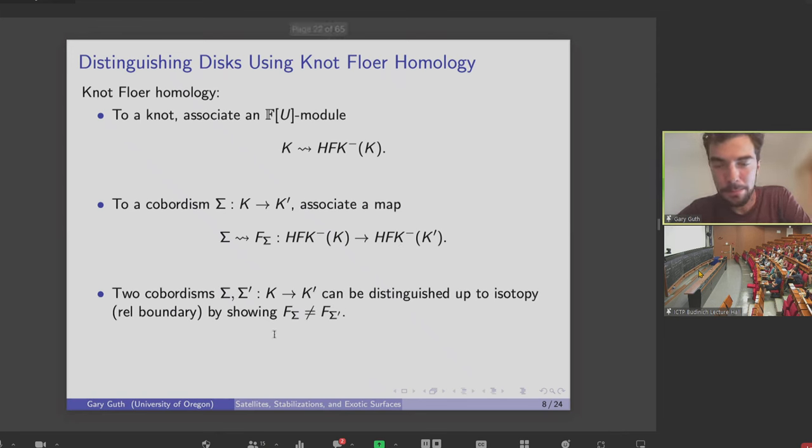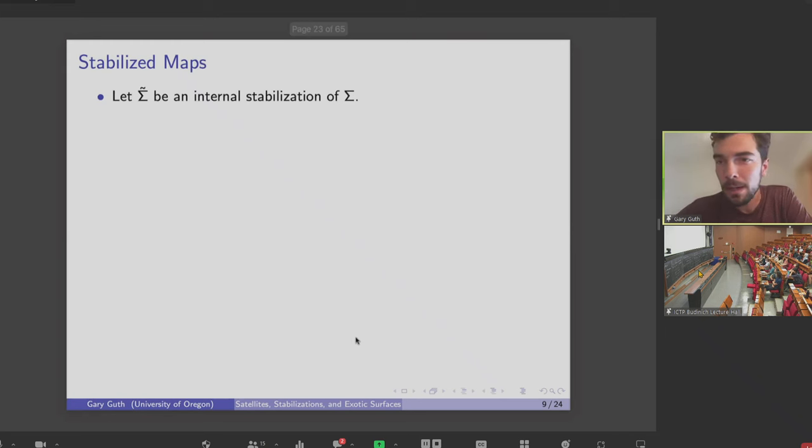And since these maps are invariants of the surfaces up to isotopy of the boundary, if you want to distinguish two surfaces, it's enough to distinguish their induced maps. Knot Floer homology is really well suited to studying stabilizations, because a stabilization has a very simple effect on the induced maps.